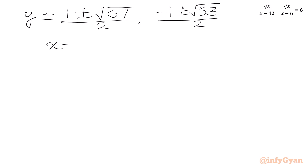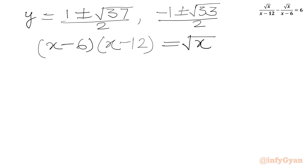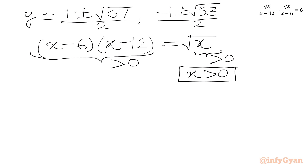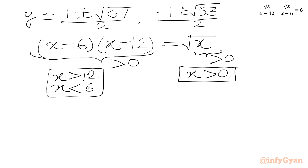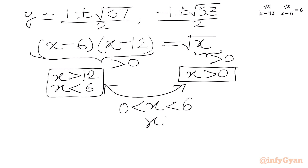Now we have to check whether we accept all four solutions. From our equation (x minus 6)(x minus 12) equal to square root x, the radicand must be positive, so x must be greater than 0. From the LHS, this product must also be greater than 0, giving two conditions: either x greater than 12 or x less than 6. Taking the intersection with x greater than 0, x must be in the interval (0, 6) or x greater than 12.